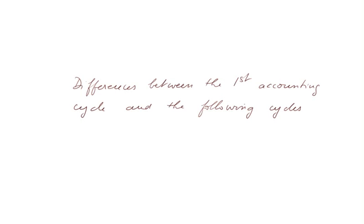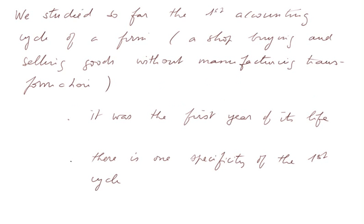Differences between the first accounting cycle and the following cycles. We studied so far the first accounting cycle of a firm, and in our example it was a shop buying and selling goods without manufacturing transformation. Observe that the goods may be the same physically, those bought and those sold, but there are other differences which do not show — it's not the same thing to have goods in suppliers in foreign countries and goods displayed nicely in a shop down the street. For our firm, it was the first year of its life, and there is one specificity in the first cycle that I shall treat today.